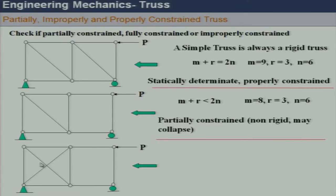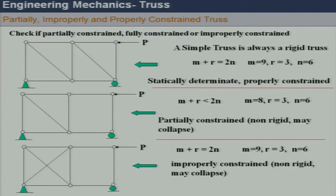In the next case, I have added that member back. So m plus r still equals 2n, but the truss is still not stable by the same logic as before. This one will be called improperly constrained — the only difference from the previous case is the name: partially versus improperly constrained.